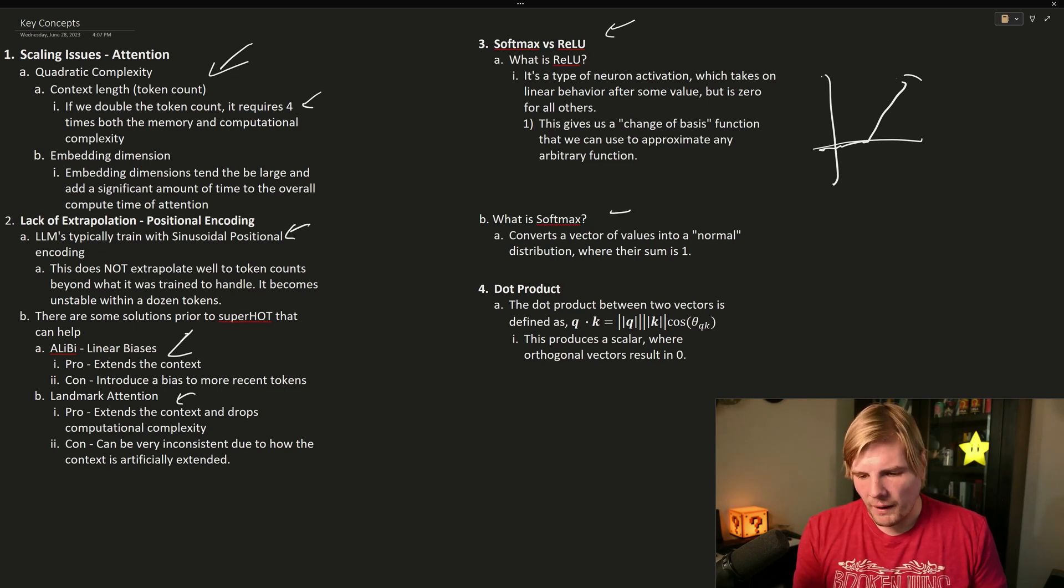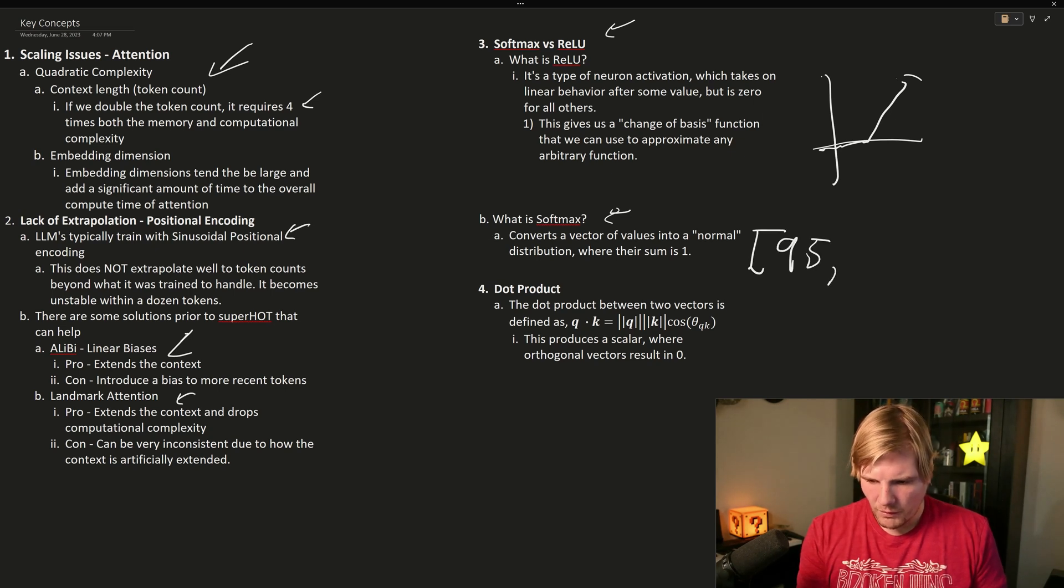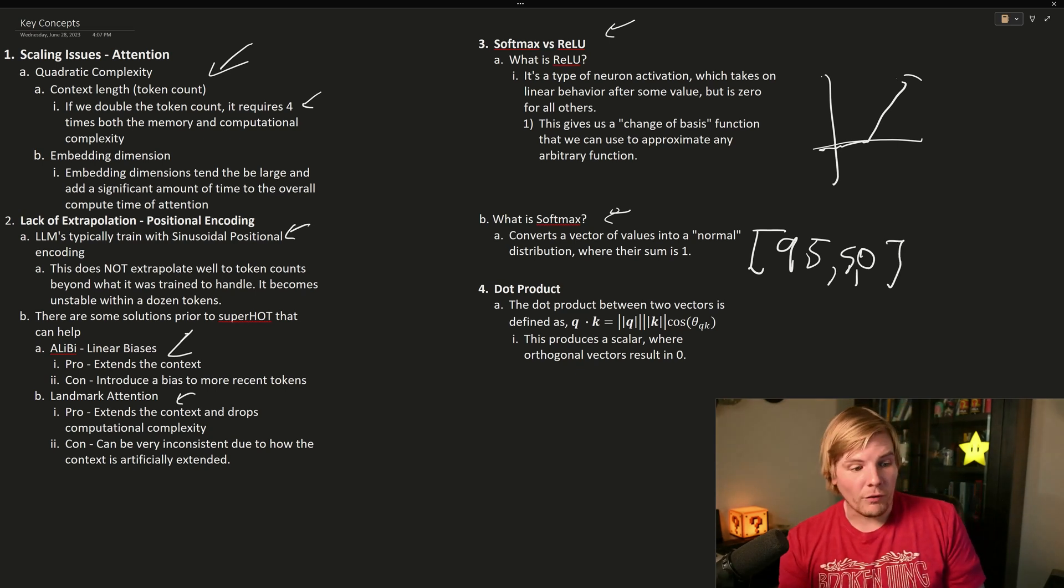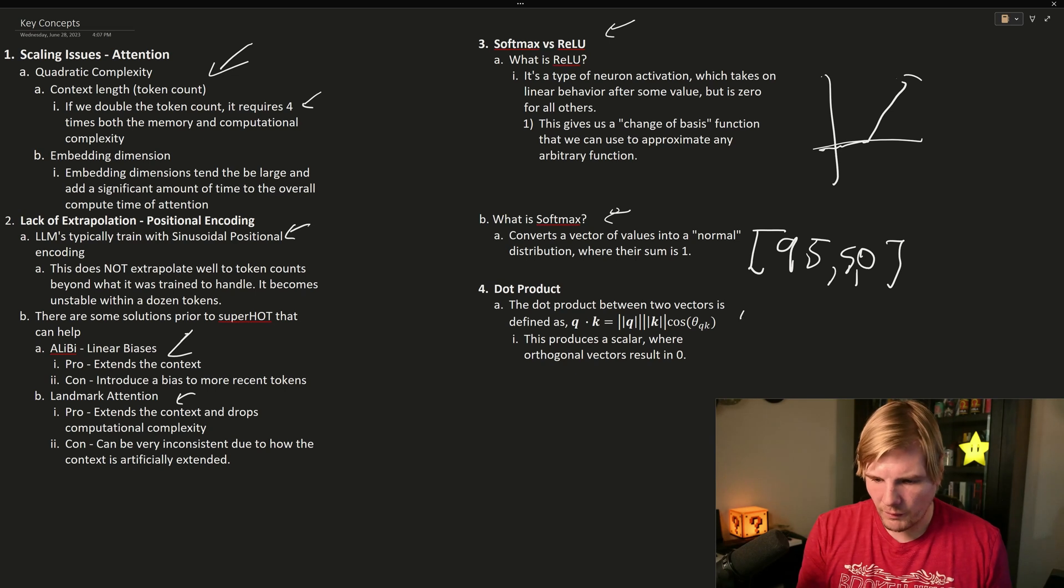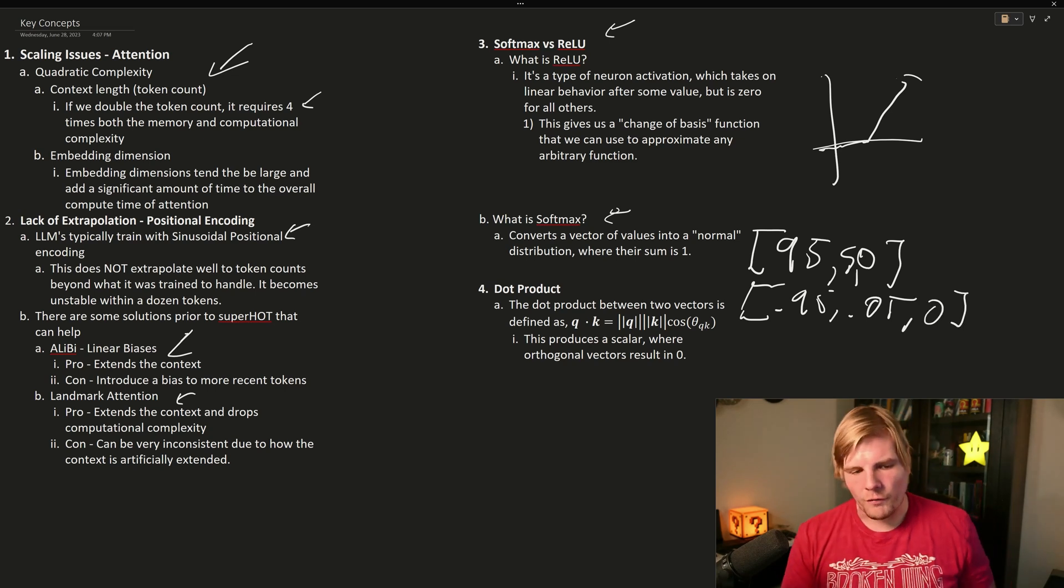Softmax takes any vector, so to make it easy on ourselves, we'll call it 95, 5, and 0. If we apply softmax to this, we get 0.95, 0.05, and 0. So softmax has taken this vector and made it sum to 1. Why we care about that is if we're trying to teach our model how to pick things, it's easier to have it on a normal distribution.